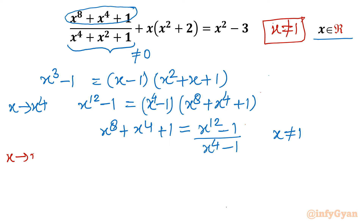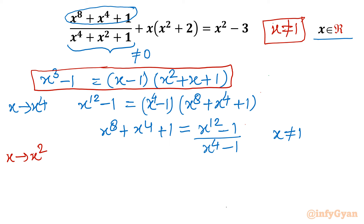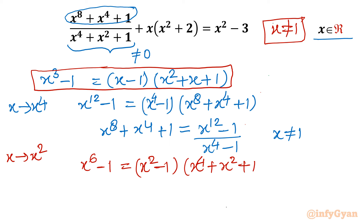Similarly, I will now replace x with x². See what comes out. Replacing x with x² in the identity gives x⁶ - 1 = (x² - 1)(x⁴ + x² + 1). The second bracket, x⁴ + x² + 1, is our denominator. So I can collect x⁴ + x² + 1 = (x⁶ - 1) / (x² - 1), again with x not equal to 1.